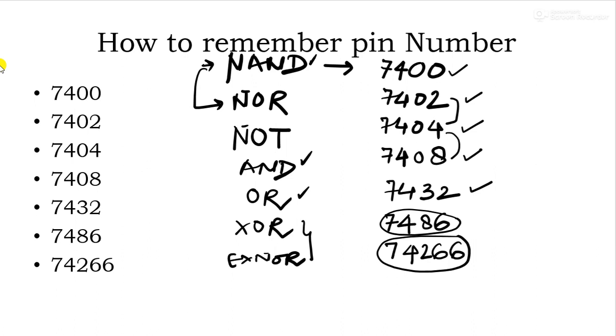So what is this? 7400 is for NAND gate. This is NOR gate. This is NOT gate. This is AND, the complement of AND. This is OR, this is XOR, and this is XNOR.